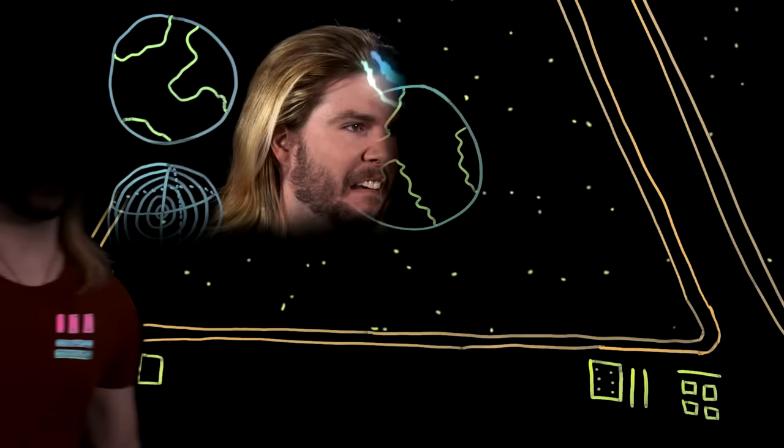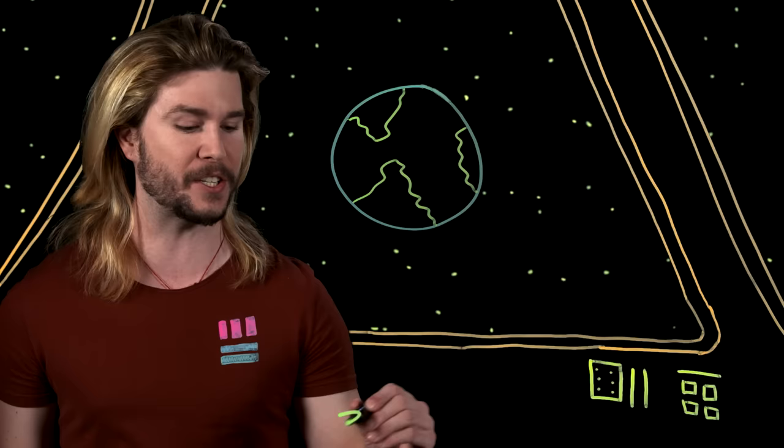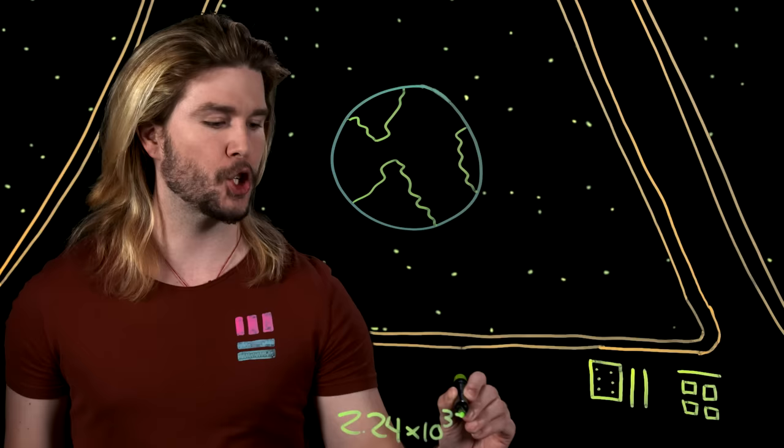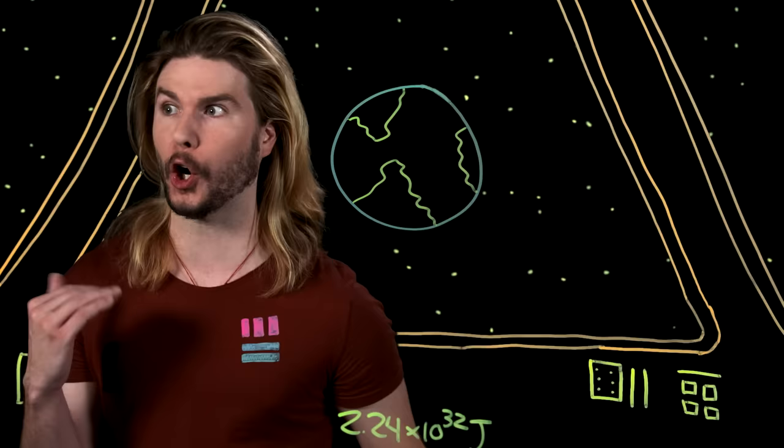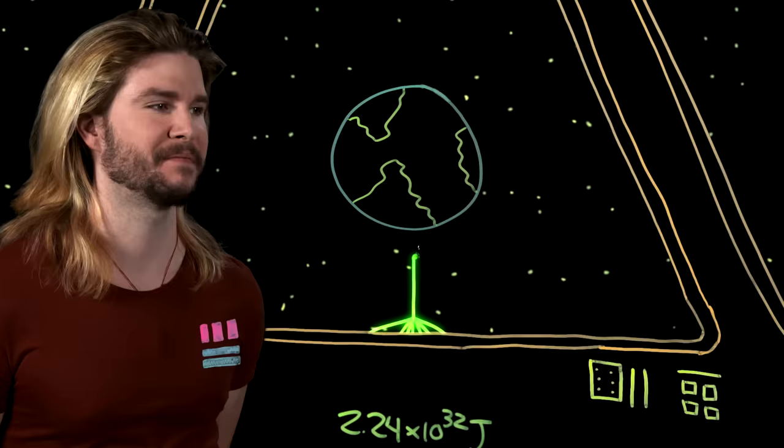If a planet like Alderaan is an Earth-sized planet, then the gravitational binding energy equation tells us the amount of energy that this station's superlaser needs to put out is at least two hundred million trillion trillion joules. That's as much energy as Earth's sun puts out over an entire week. You may fire when ready. Scum.